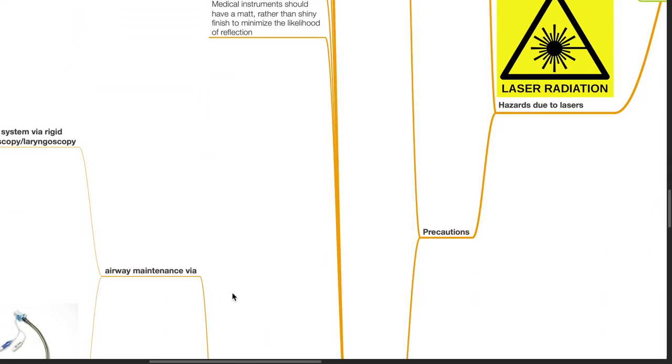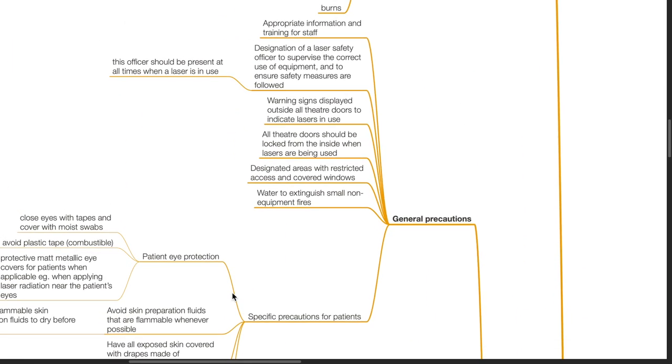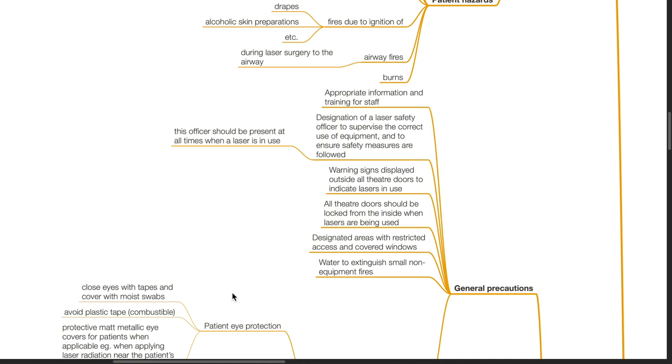Precautions towards hazards due to lasers. General precautions: Appropriate information and training for staff. Designation of a laser safety officer to supervise the correct use of equipment and to ensure safety measures are followed. This officer should be present at all times when a laser is in use. Warning signs should be displayed outside all theatre doors to indicate lasers are in use. All theatre doors should be locked from the inside when lasers are being used. Designated areas with restricted access and covered windows should be provided. Water should be used to extinguish small non-equipment fires.